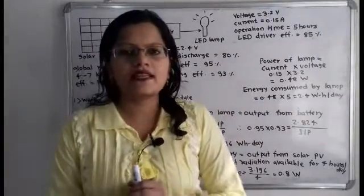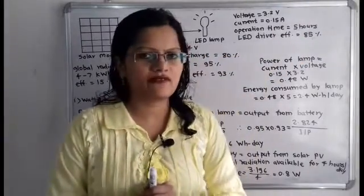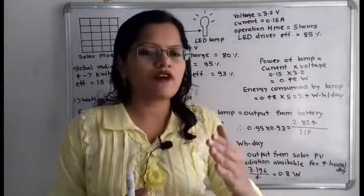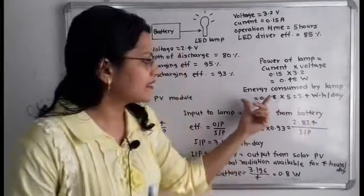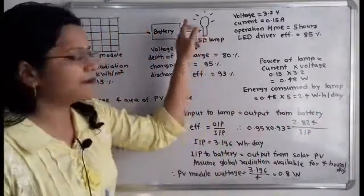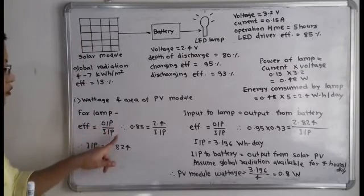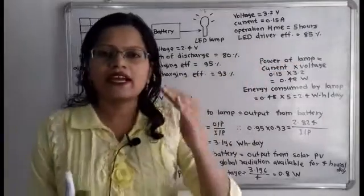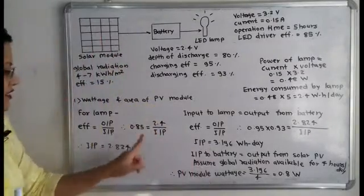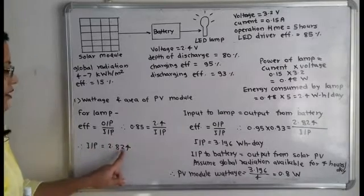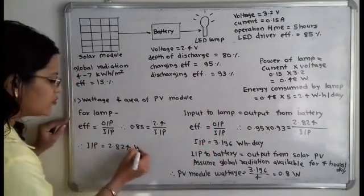The LED driver efficiency is 85 percent. Efficiency equals output divided by input, so: 0.85 = 2.4 / input. Solving for input, the input energy to the lamp is equal to 2.4 / 0.85 = 2.824 watt hour per day. This is the input energy required by the lamp from the battery side.